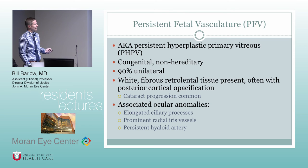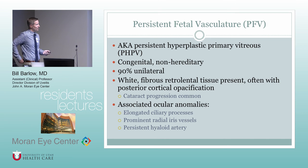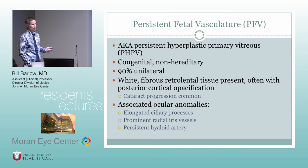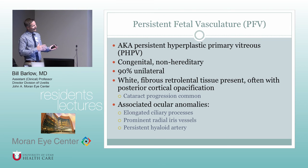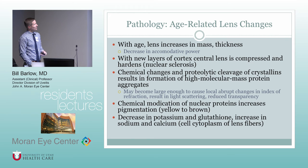Persistent fetal vasculature (PFV), also called persistent hyperplastic primary vitreous (PHPV), is congenital and non-hereditary. It's usually unilateral, presenting with white fibrous retrolental tissue and often posterior cortical opacification. Cataract progression is very common. Associated findings include elongated ciliary processes, prominent radial iris vessels, and persistent hyaloid artery. Visual prognosis is generally poor, though the extent of changes varies and impacts visual potential.